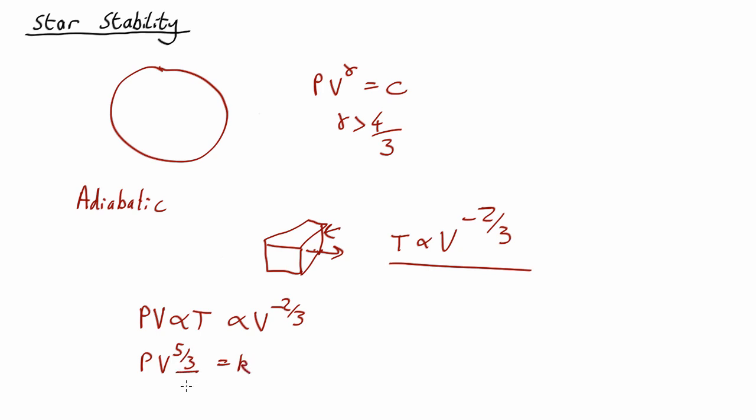So gamma is five thirds, which is more than four thirds, so the Sun is stable. Good to know.